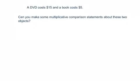So here's a problem. Let's see what we can do with it. A DVD costs $15 and a book costs $5. Could you make some multiplicative comparison statements about these two objects? You just took some notes about some phrasing that you might use and you have an example from the ribbons. See what you can do. Pause it. Write some down. When you're ready, come on back.